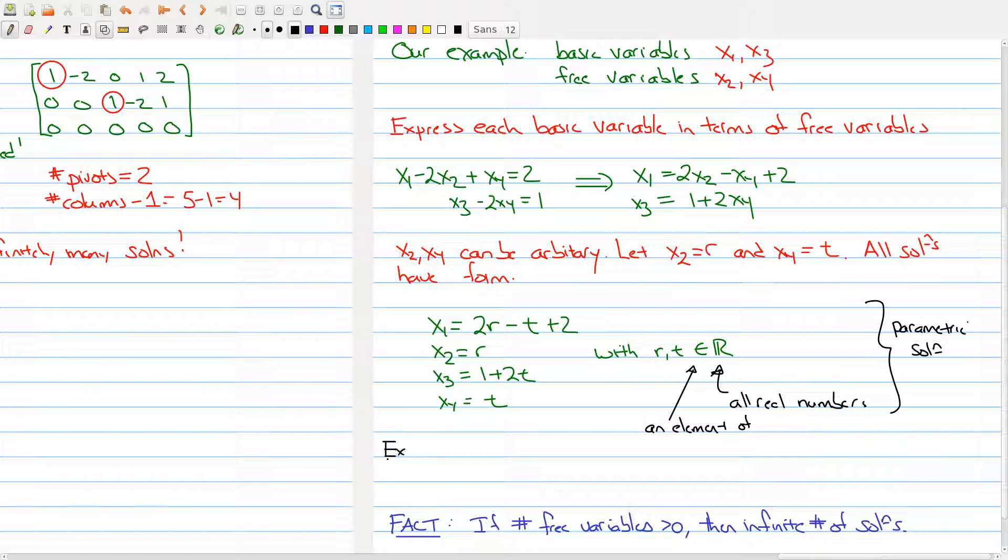So as an example, let's say that I took my r to be 0 and t to be equal to 1. Well, that means that then x1, x2, x3, x4, if I plug in 0 and 1 for r and t, I get that 2, 0, 3, and 1 is a solution to the system of linear equations. So this gives me one specific example.